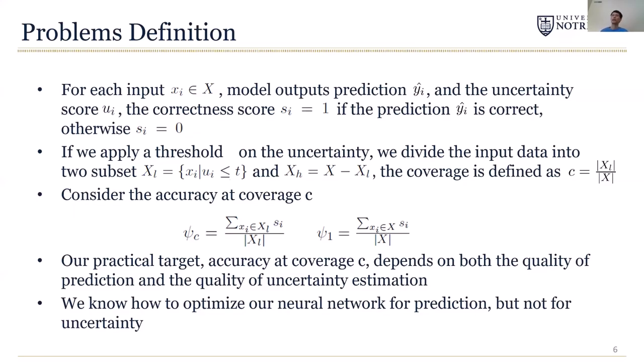The coverage of the model c is defined as |x_l| over |x|. Based on the above definition, the model's accuracy at coverage c is P@c. In a special case where c equals 1, P@c becomes P@1, which is the conventional accuracy on the whole dataset. So we can see that P@c is our practical target and P@1 is the training target.